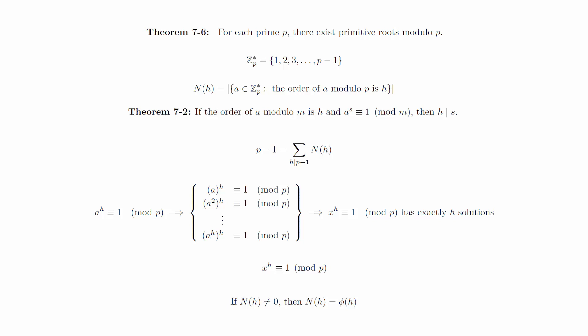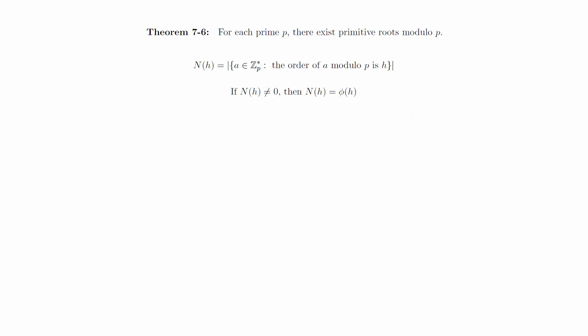In other words, if N(h) is not equal to 0, then N(h) is equal to phi of h. For any given value of h, we still don't know whether N(h) is 0 or phi of h, but we do know that N(h) is less than or equal to phi of h for all h.